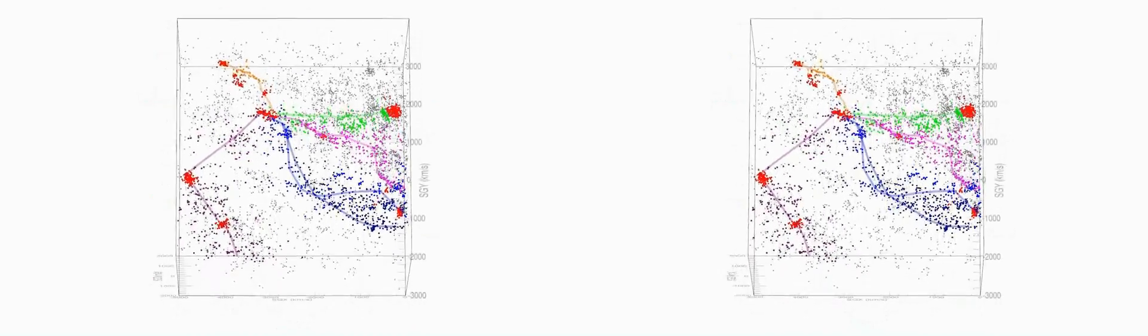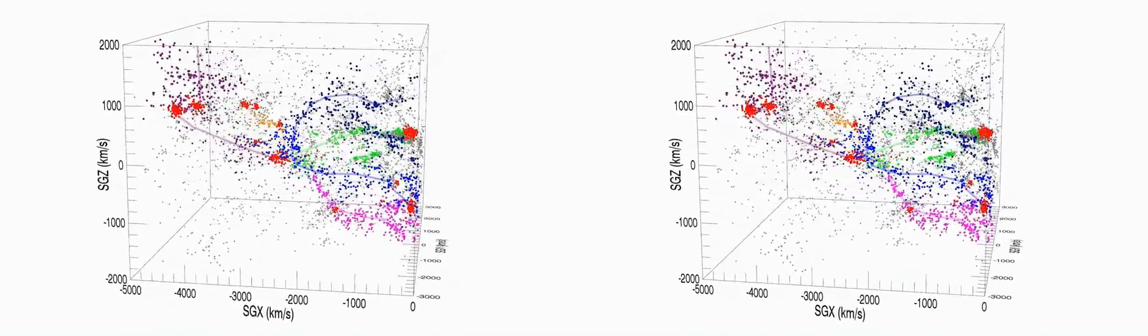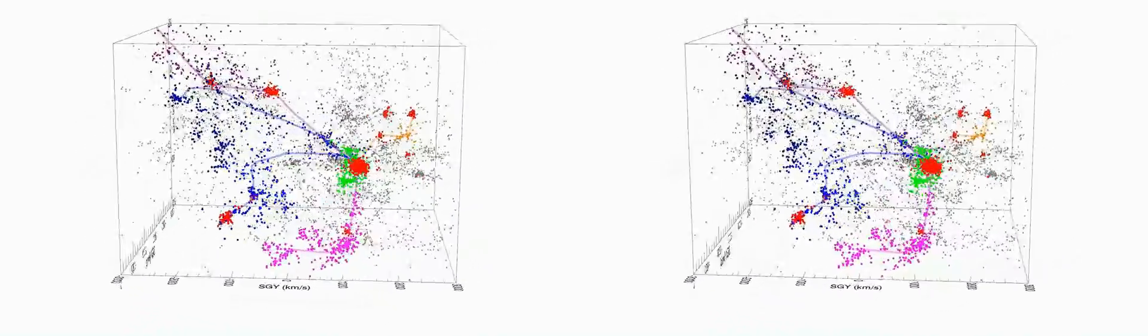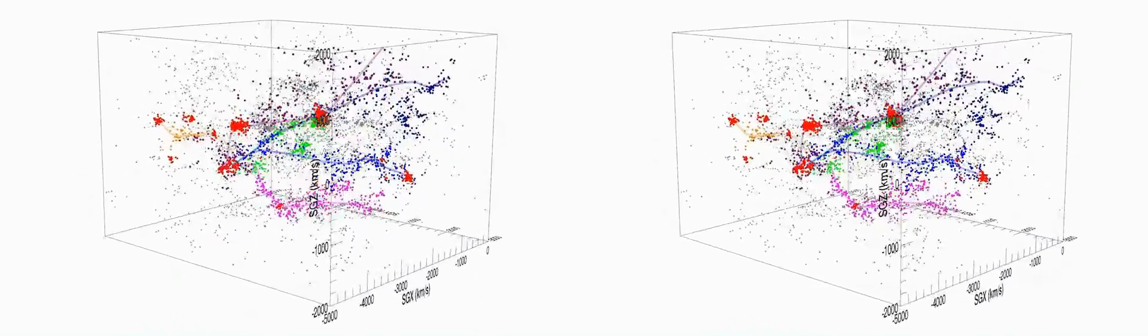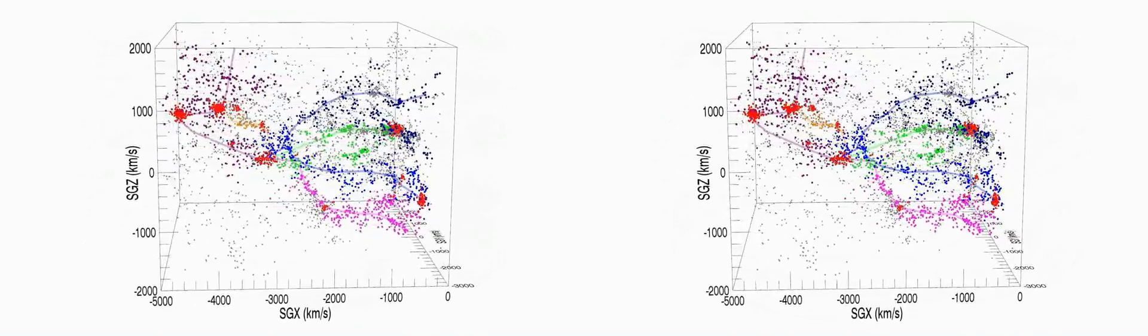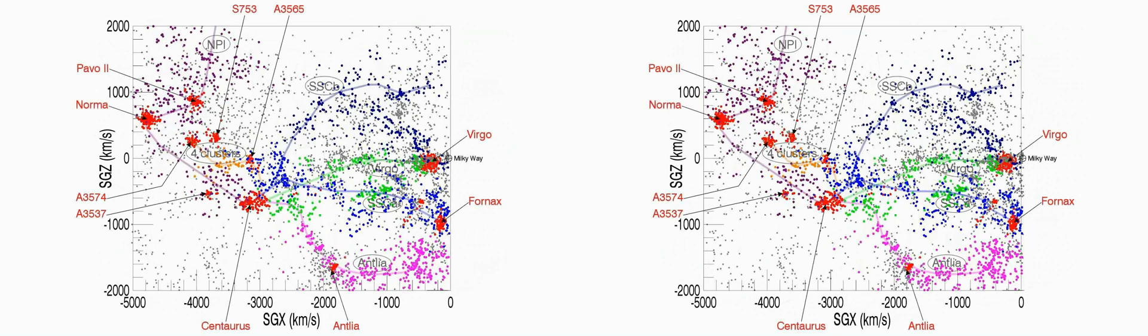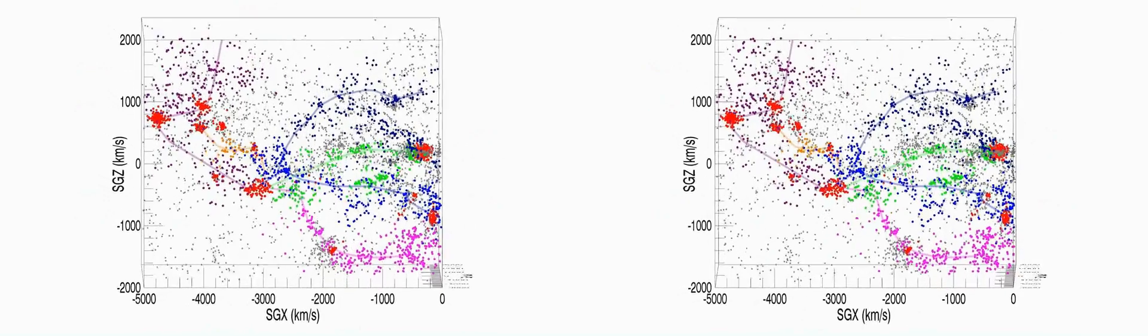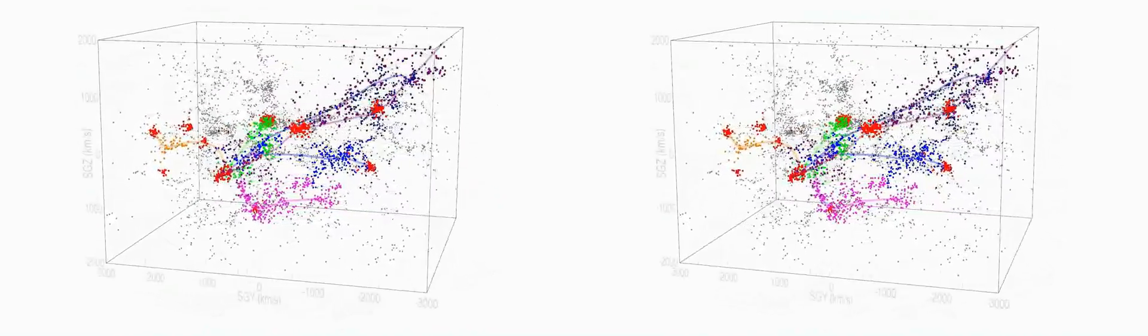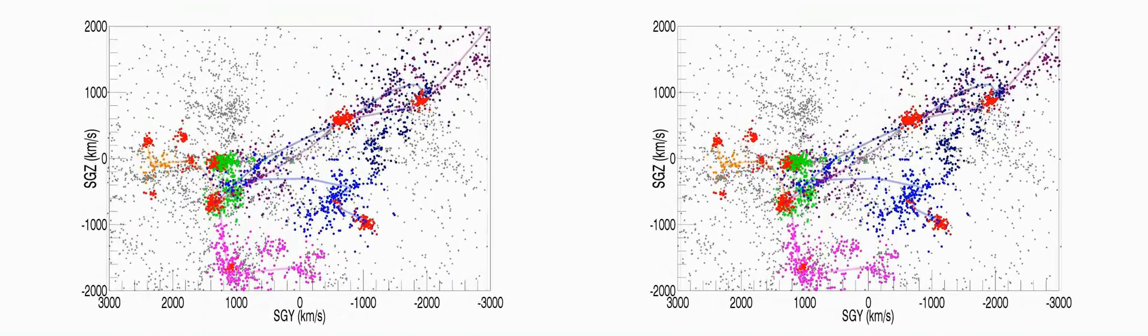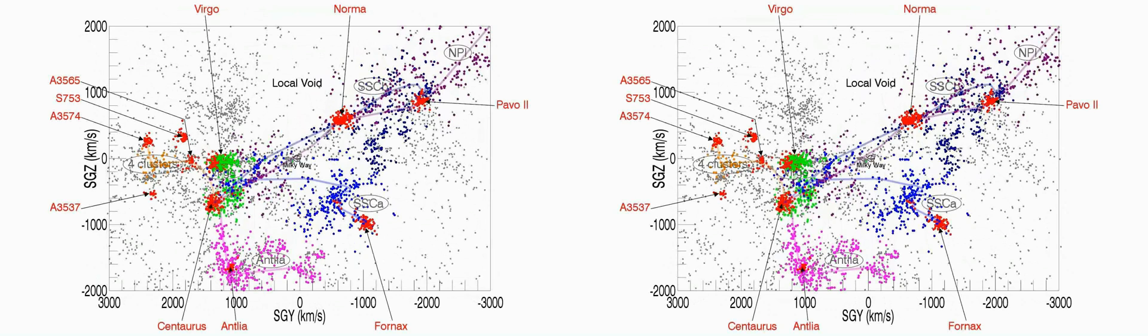The convergence of the five filaments onto the Centaurus cluster is seen best with movement of the viewing angle. The scene reminds us of the mini arms of an octopus. There is a vertical wall of galaxies in this view that includes the Centaurus and Leia and Virgo clusters. See how the local void is bounded by two of the strands from Centaurus.